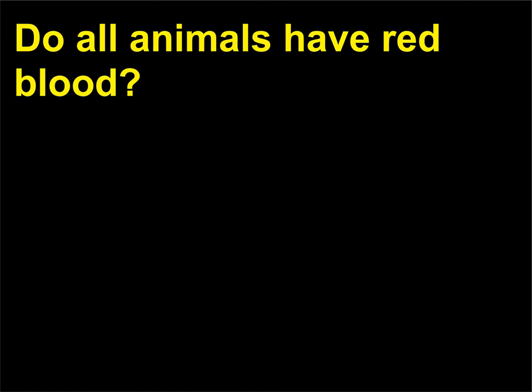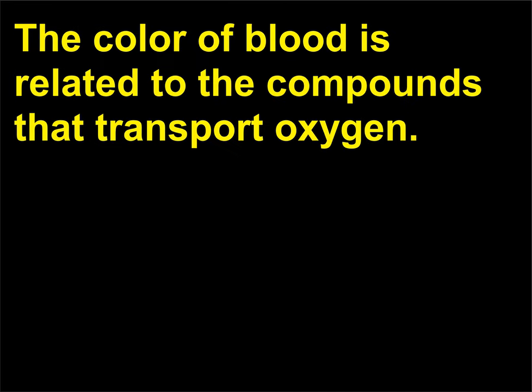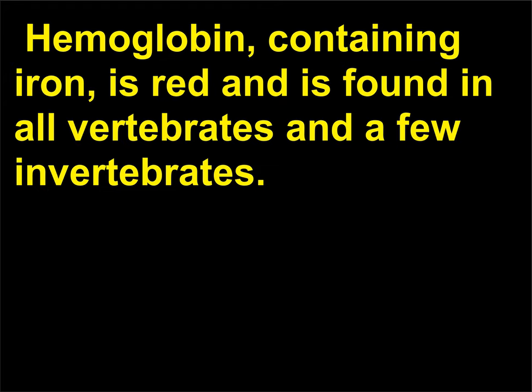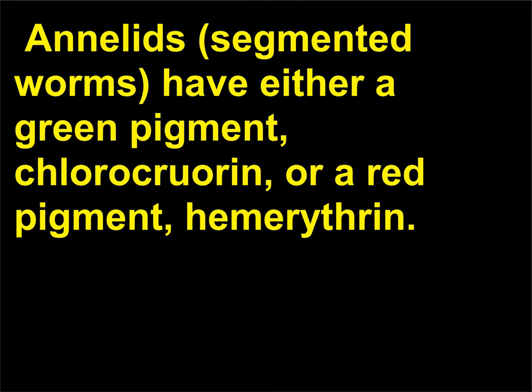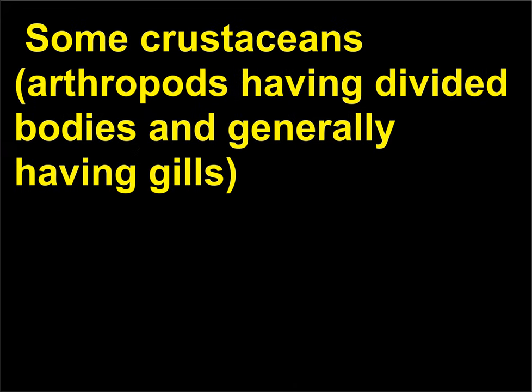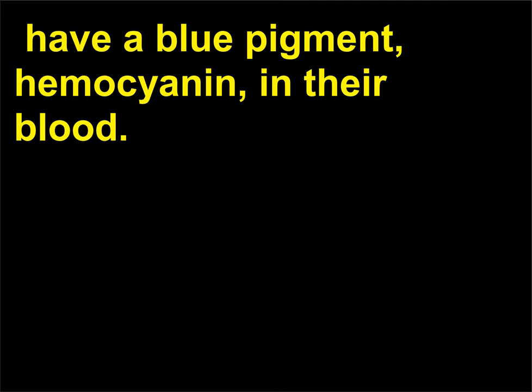Do all animals have red blood? The color of blood is related to the compounds that transport oxygen. Hemoglobin, containing iron, is red and is found in all vertebrates and a few invertebrates. Annelids (segmented worms) have either a green pigment, chlorocruorin, or a red pigment, hemerythrin. Some crustaceans — arthropods having divided bodies and generally having gills — have a blue pigment, hemocyanin, in their blood.